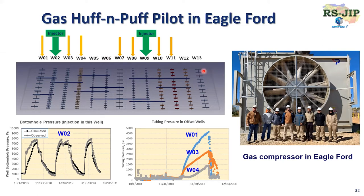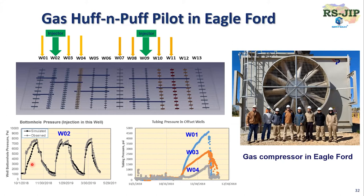We work with operators to design a pilot for gas huff-and-puff. This pilot in Eagle Ford includes 13 wells and two pads. Pad one has one injector and the three neighboring wells shut in. Pad two has one injector and four wells shut in. The field data shows three cycles — when you inject in well two, the other three neighboring wells show a pressure response increase. This is strong evidence of well interference due to fracture hits. We really need to design a better pilot for gas huff-and-puff considering these hits. Using our model, we can get a better match — without fracture hits, it's difficult to match.